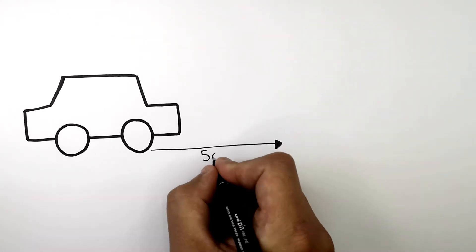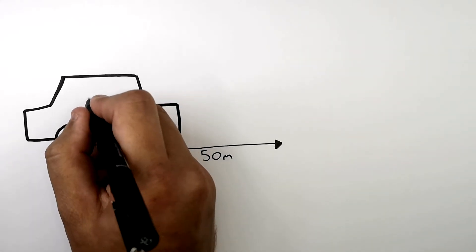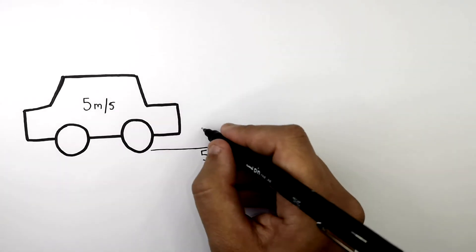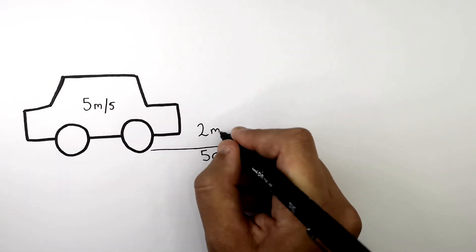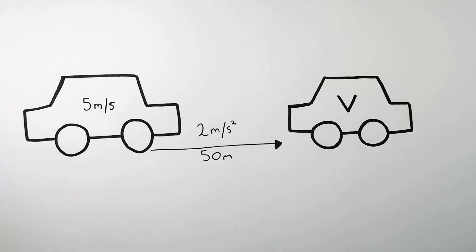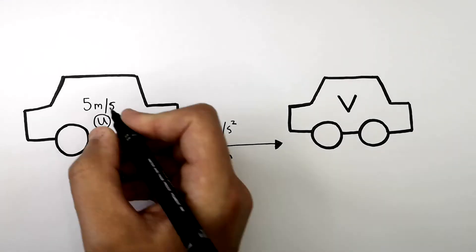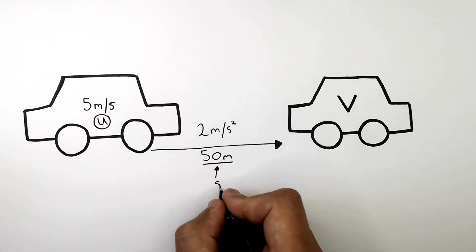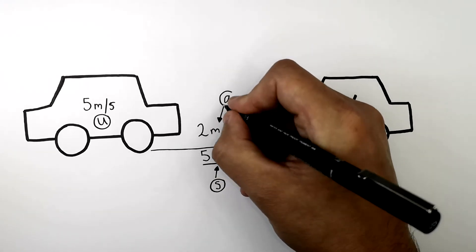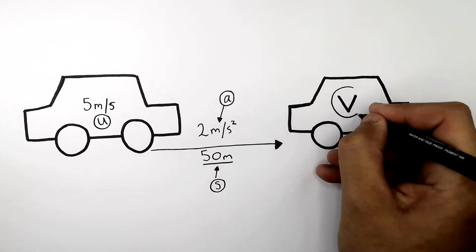This car accelerates for 50 metres, from an initial velocity of 5 metres per second, with an acceleration of 2 metres per second squared. So what is the final velocity this car will have? 5 metres per second is u, the initial velocity. 50 metres is s, the displacement. 2 metres per second squared is a, the acceleration.